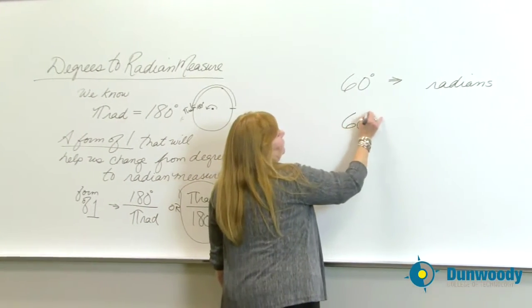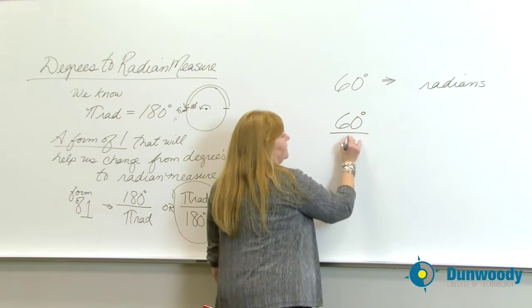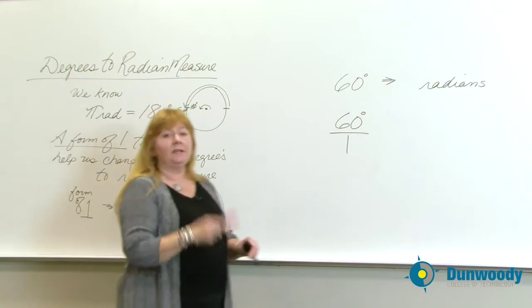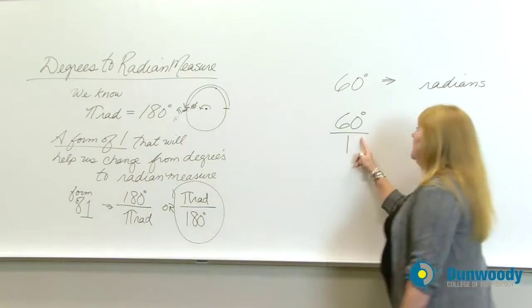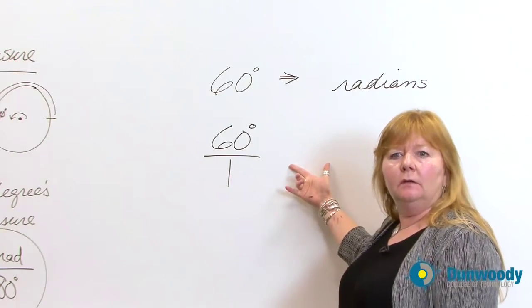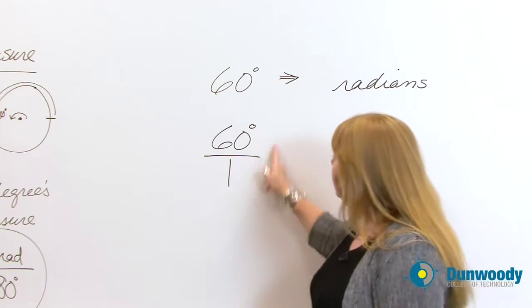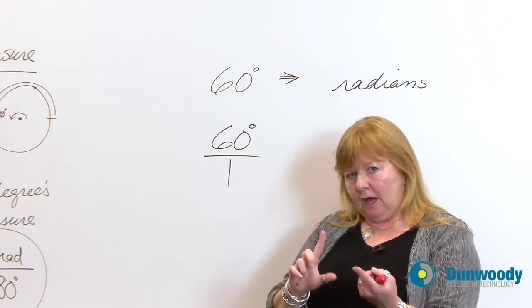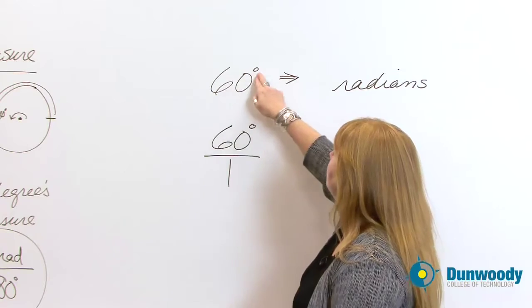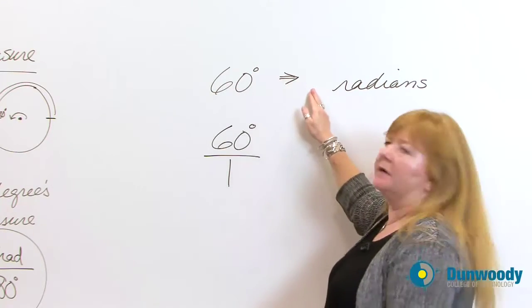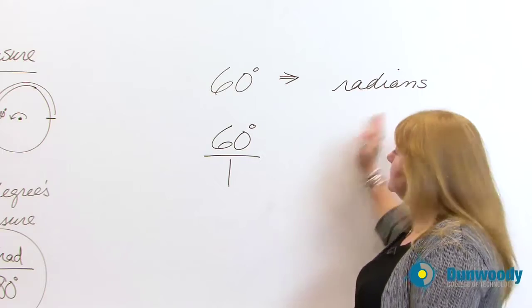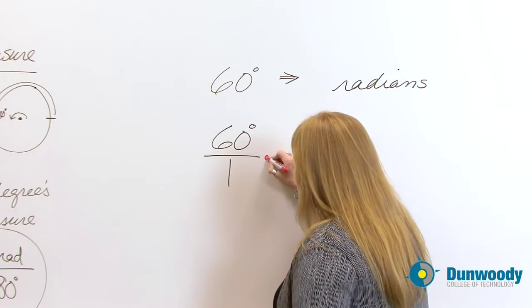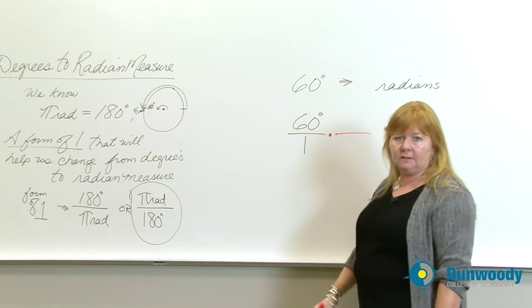So here you have 60 degrees, and 60 degrees written as a fraction looks like this. The reason why I'm doing that is I want to take, and isn't it true that any number times one means exactly the same thing. Any number times a form of one allows me to change how something looks but not what it means. I want to change from measuring in degrees into something called radians. I look at what I want to eliminate. I don't want those degrees there. I actually want to get radians into the mix.